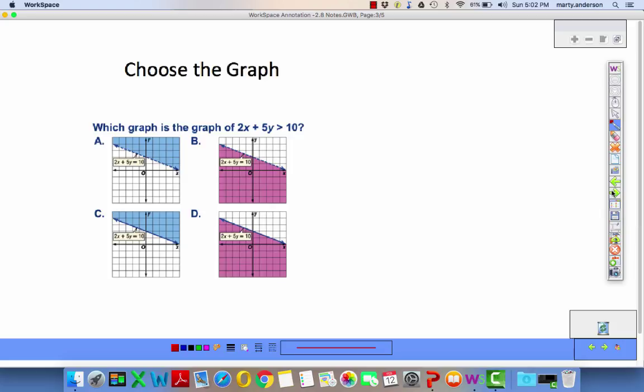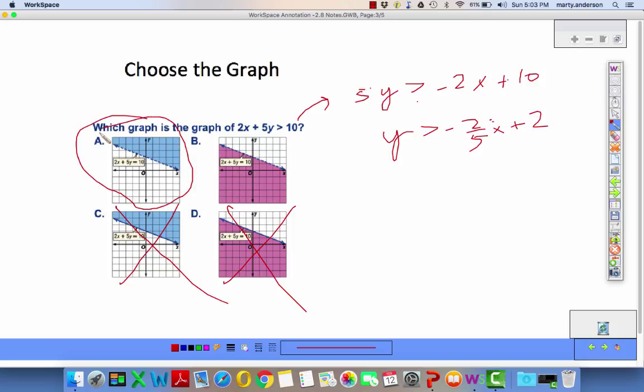Which graph is the graph of 2x plus 5y is greater than 10? Notice they have the same boundary line graphed, but we've got to check to see whether we're going to have it shading above, shading below, dotted, or solid. Notice I can already tell it's going to be a dotted line. So this one is not dotted. This one is not dotted. Those two are dotted. I've got to figure out if I'll shade above or below. Let's solve anyway. 5y greater than negative 2x plus 10. y greater than negative 2/5x plus 2. I divided by a positive. Shading above. Got to be A.